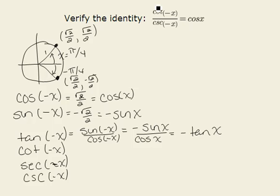In this problem, we need cotangent and cosecant. We can simplify by recognizing that cot(-x) = cos(-x) / sin(-x).